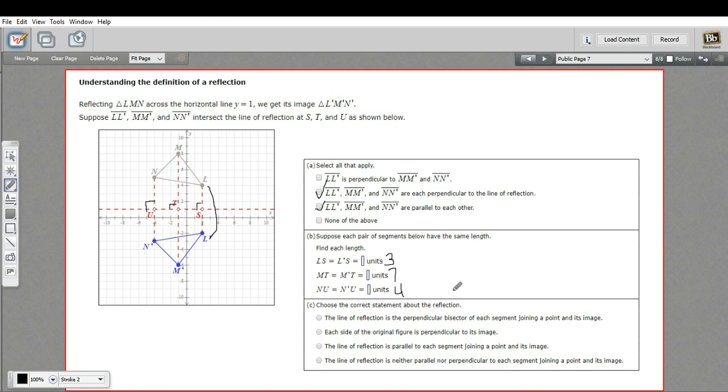Then it says choose the correct statement about the reflection. The line of reflection is the perpendicular bisector of each segment joining a point and its image. I think we got lucky that this one came first because that looks like the right answer. What we've just shown is that each side of these segments have the same measure and they're perpendicular. So that's exactly what a perpendicular bisector is. That's what's going on here in a reflection, and that's how a reflection is constructed.